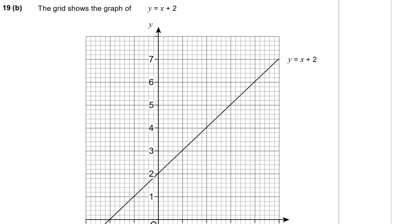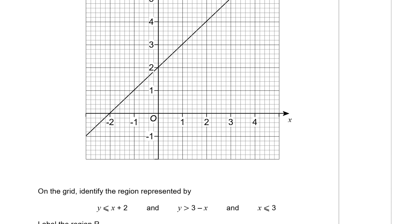Question 19b has a graph of Y equals X plus 2 shown. And we're asked on the grid, identify the region represented by Y is less than or equal to X plus 2. And Y is greater than 3 minus X. And to label that region R. So Y equals X plus 2 is already on the graph. But we don't have a line for Y equal to 3 minus X. So should we probably draw that one first? Now you can either do that with a table of values. So you could pick some values of X like minus 2, 0, 2 and 4 and find corresponding values of Y. So Y is 3 minus X. 3 minus negative 2 is 5. 3 minus 0 is 3. 3 minus 2 is 1. And 3 minus 4 is minus 1. So I can plot those on.